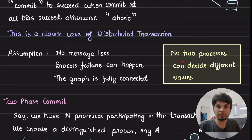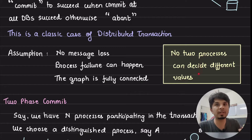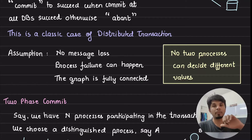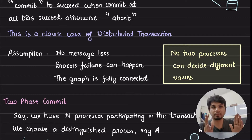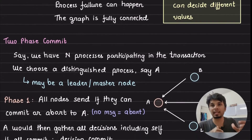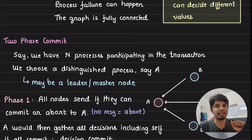At the end of your distributed transaction, the protocol must ensure that no two processes decide on different values — either everyone commits or everyone aborts. You cannot have five nodes committing while four are aborting. The decision has to be unanimous and uniform. Now let's jump into the two-phase commit protocol and see how it tries to ensure a distributed transaction.